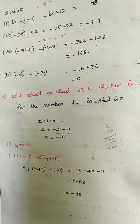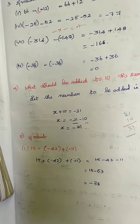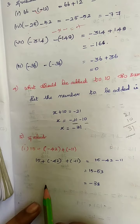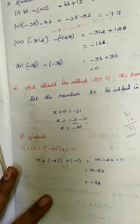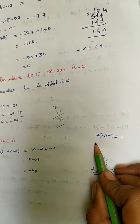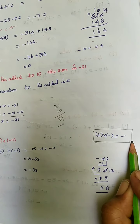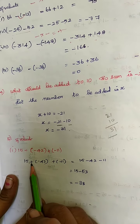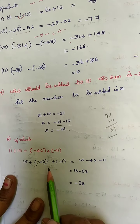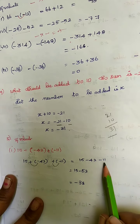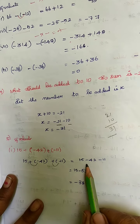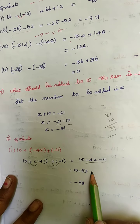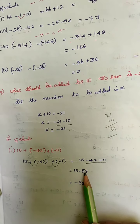The next problem: evaluate 15 plus of minus 42 plus of minus 11. In the next step we make plus into minus — you know the formula. Two different symbols multiplied gives minus. So plus into minus 42 is minus 42, and plus into minus 11 is minus 11. Now minus 42 minus 11 — same symbol — so you add them, giving 53, and the bigger number is minus, so minus 53.